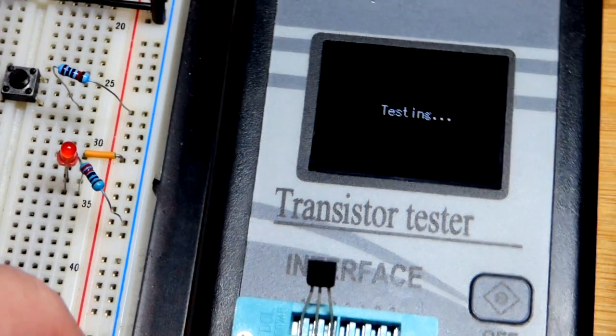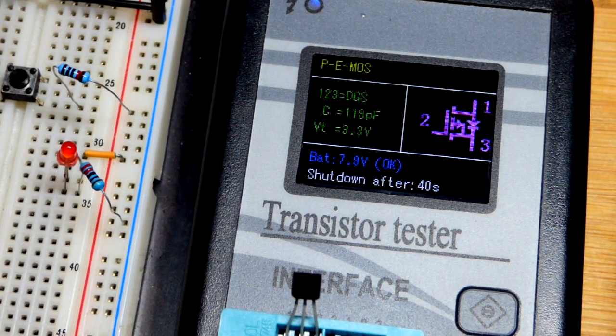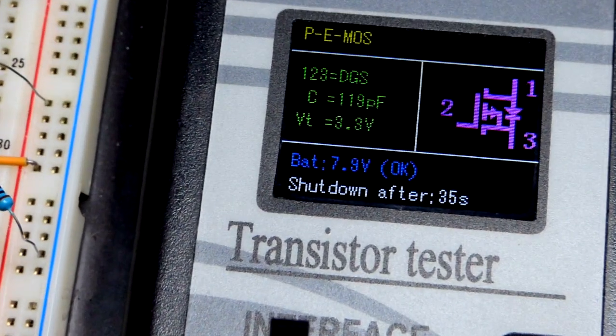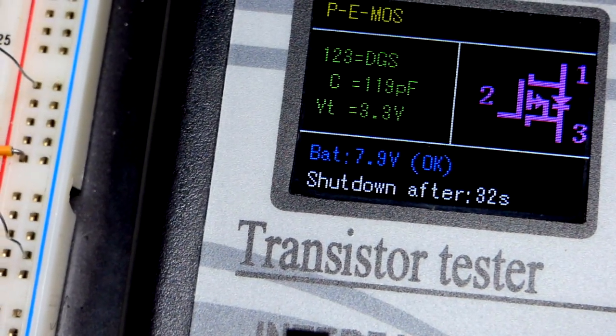We hit the test button. We're going to wire this up as a switch, that's really about the simplest transistor circuit. You can see pin number one is the drain, pin number two is the gate, and pin number three is the source.